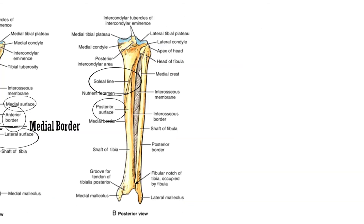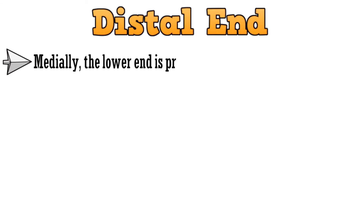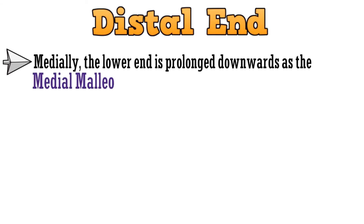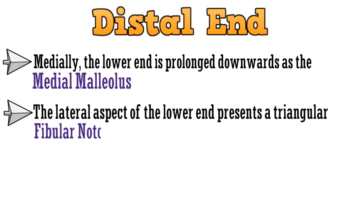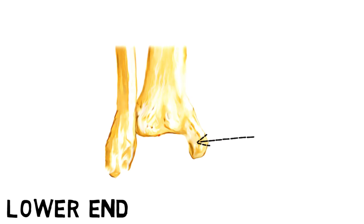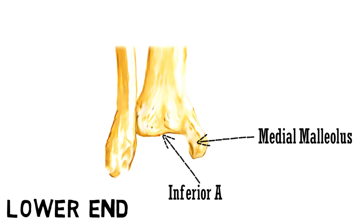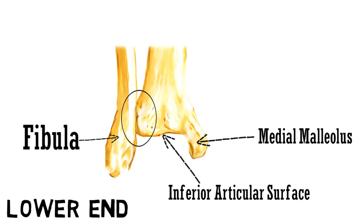With this, we complete the shaft and move to the last part — the distal end. Medially, the lower end is prolonged downwards as the medial malleolus. The lateral aspect of the lower end presents a triangular fibular notch. The inferior surface of the lower end is the inferior articular surface. This is the lower end of the bone, and this part extended downwards is the medial malleolus. This is the inferior articular surface. Here, the fibular notch is present to which the lower end of the fibula articulates.